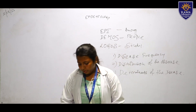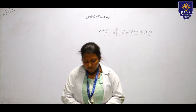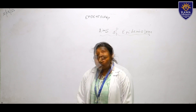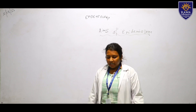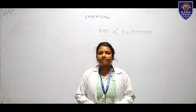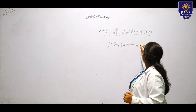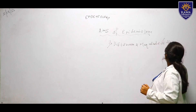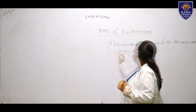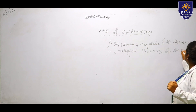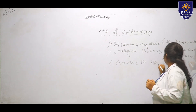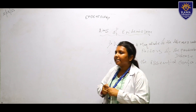Now we come to the aims of epidemiology. According to the IEA (International Epidemiological Association), there are three main aims: first is distribution and magnitude of the disease, second is to identify the etiological factors, and third is to provide essential data.